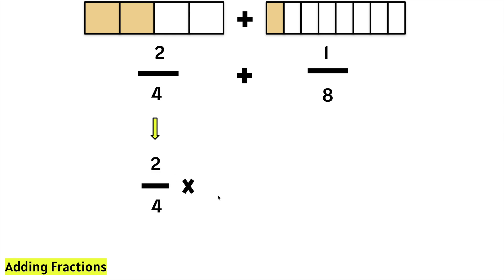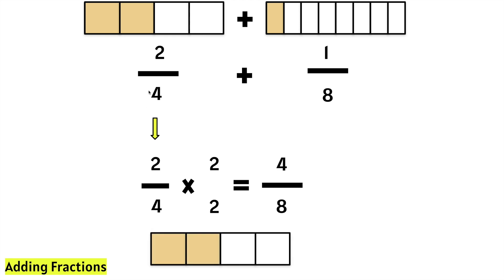2 fourths times what will give us a denominator of 8, so we can have common denominators? We know that 4 times 2 is 8, and whatever we do to the bottom, or the denominator, we must do to the numerator. So, let's multiply the numerator by 2. 2 times 2 is 4. So, we have 2 fourths, and we are converting it into eighths. Let's turn this model into eighths. We notice that we have 1, 2, 3, 4 eighths. 2 fourths is the same thing as 4 eighths.